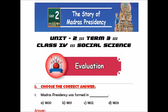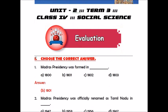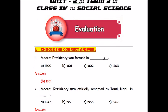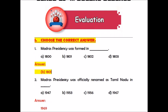Row number one: Choose the correct answer. Question number one: Madras Presidency was formed in dash. Options are 1800, 1801, 1802, 1803. The answer is 1801 — Madras Presidency was formed in the year 1801.